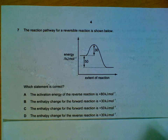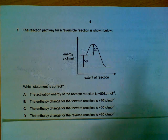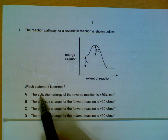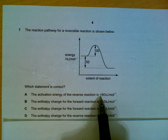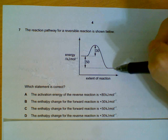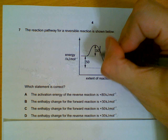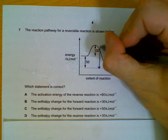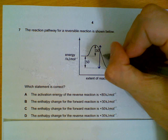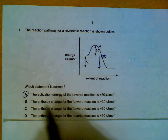Question 7: a reaction pathway diagram for a reversible reaction — which statement is correct? Option A states the activation energy of the reverse reaction is plus 80 kilojoules. The activation energy of the reverse reaction is the full hill you have to climb going backwards, which is 80 kilojoules. That is actually correct. Let's check the other options to make sure.